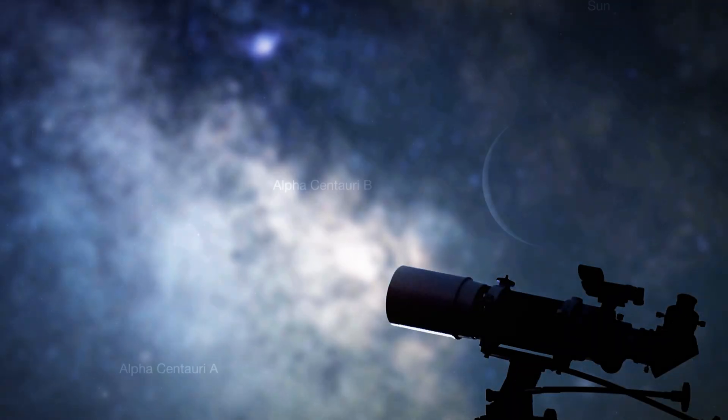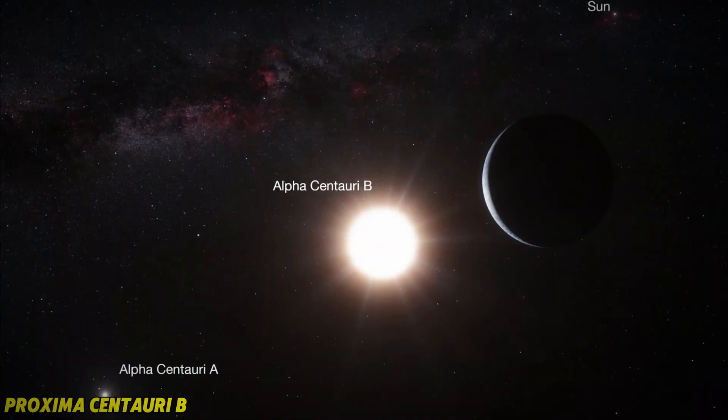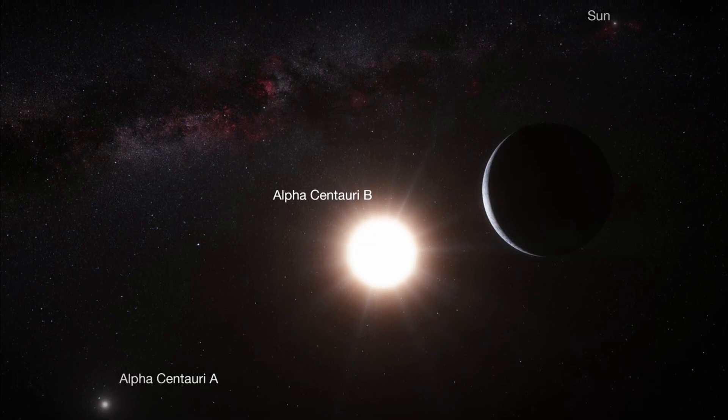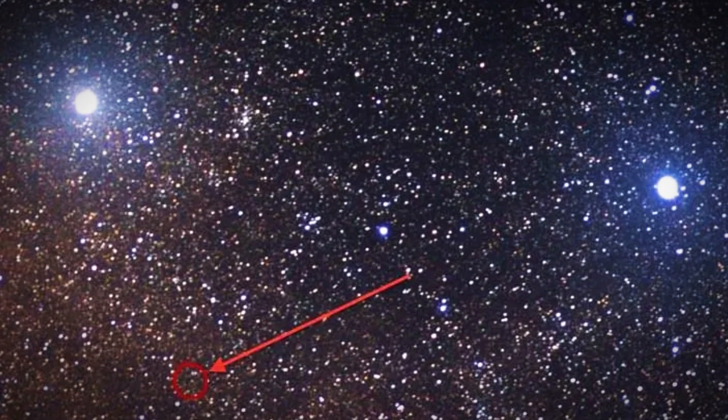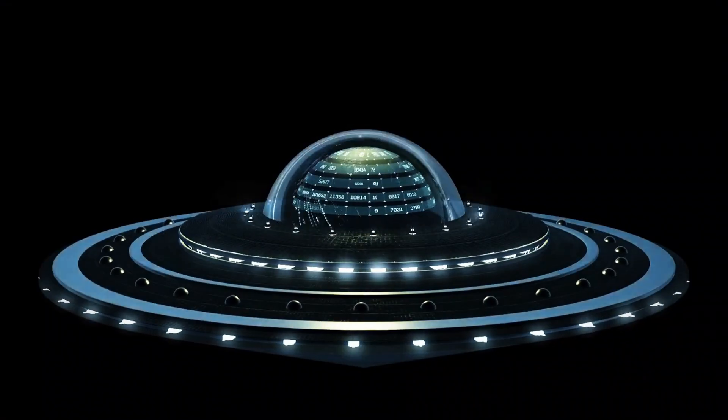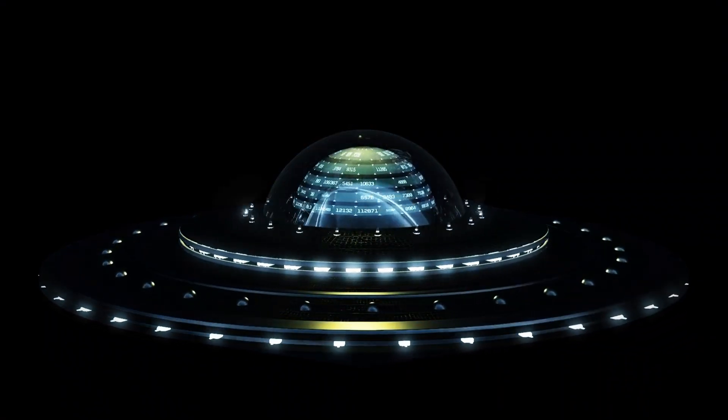The telescope focused on Proxima Centauri b, the closest star to Earth, and detected unusually bright lights emanating from it. What could be causing these lights to resemble those of a city? Could this be proof of extraterrestrial life?